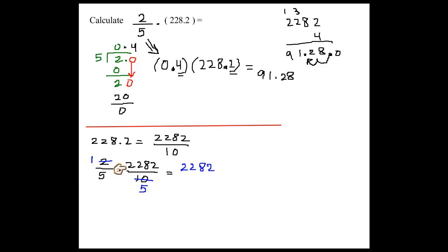So 1 times this number would be the number itself. And then at the bottom of the fraction, it's 5 times 5. It's equal to 25.